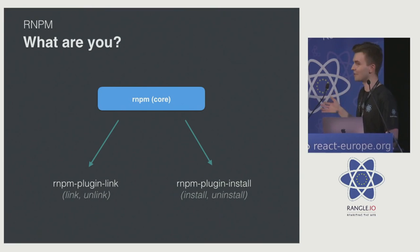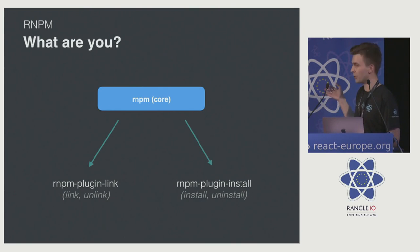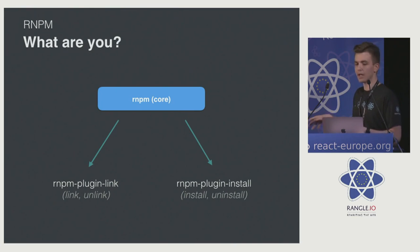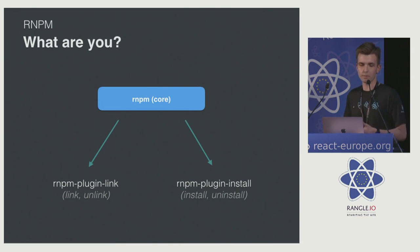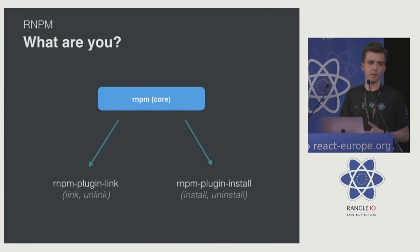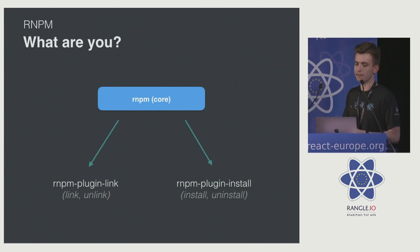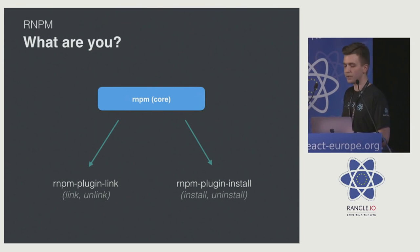RMPM itself is divided into three parts. There is the core part that is responsible for running your plugins and commands. And there are these independent plugins — like there is the RMPM plugin link, which you probably know the most because that's the most popular part, that you use to link your native dependencies. We also have the install plugin that installs and uninstalls your dependencies. So that's the current state of RMPM.